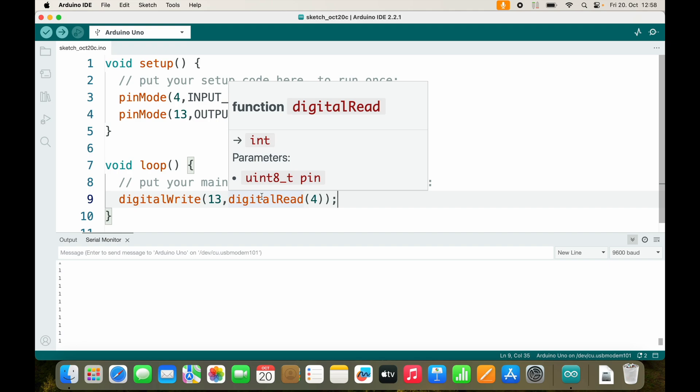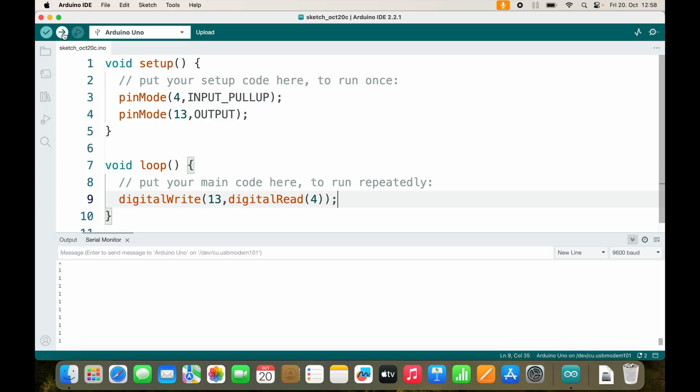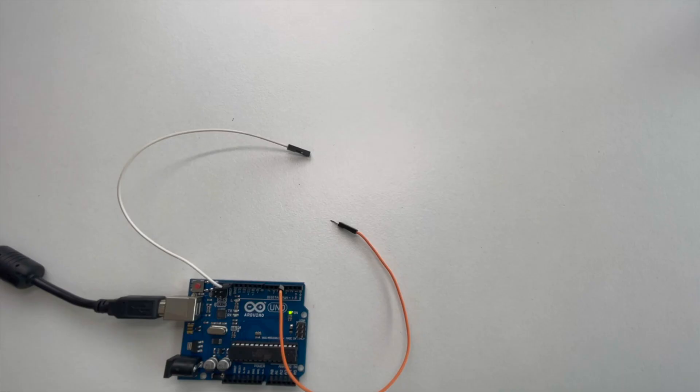Now right now I don't have a delay inside of my loop, so the LED will react very fast to changes of pin 4. Let's upload the sketch and see what happens.